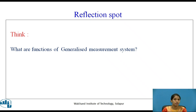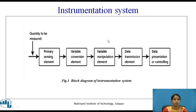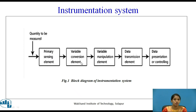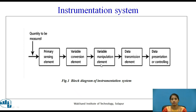The generalized measurement system is an instrumentation system. The quantity being measured is given to the primary sensing element first, where it is sensed and forwarded to the variable converger element. Here, if required, the signal is converted from one form to another. This is then passed to the variable manipulation stage, where manipulation of the signal or physical quantity is done.